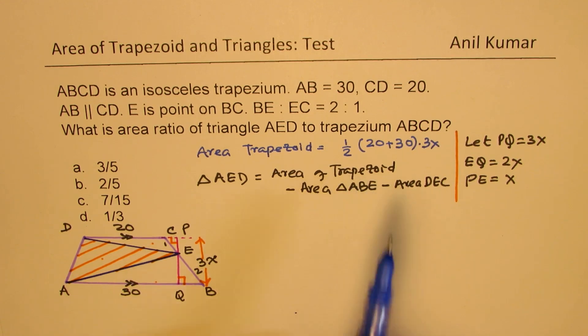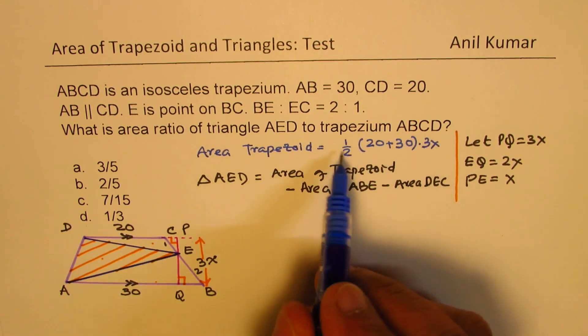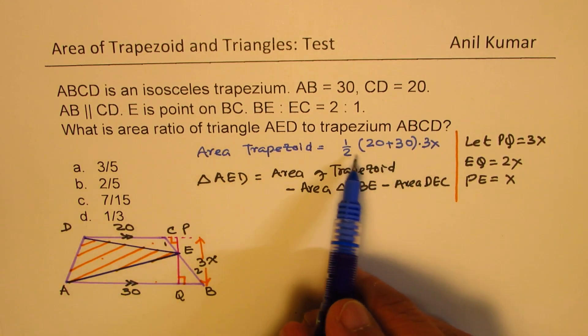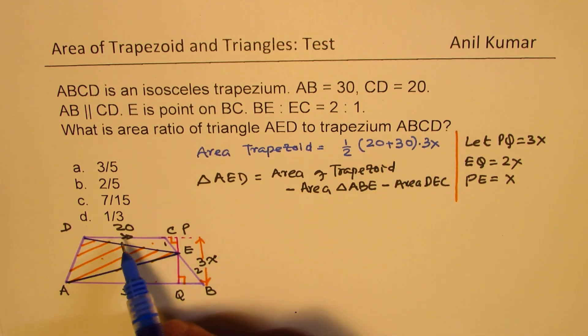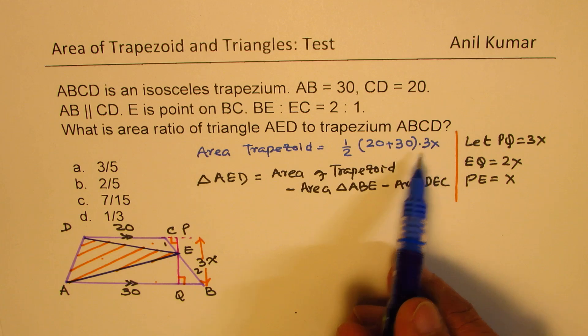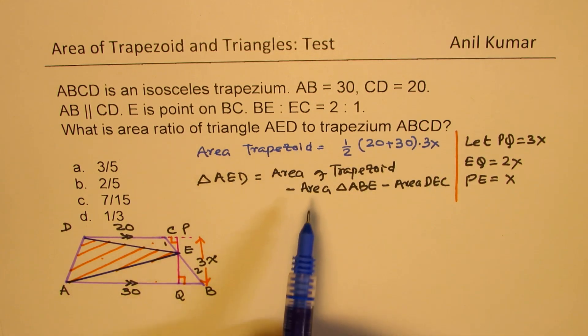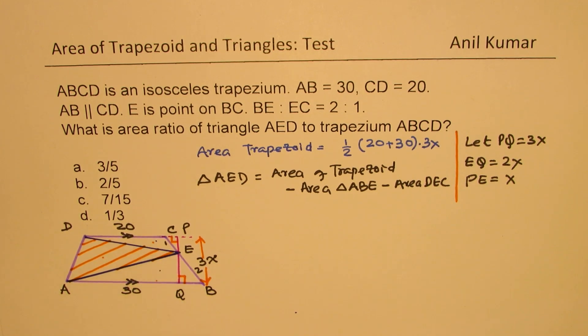Now, so this area of trapezoid is half of 50 times 3X. 20 plus 30 times 3X. That is the area of trapezoid. And from this area, we are going to take away area of these two triangles.